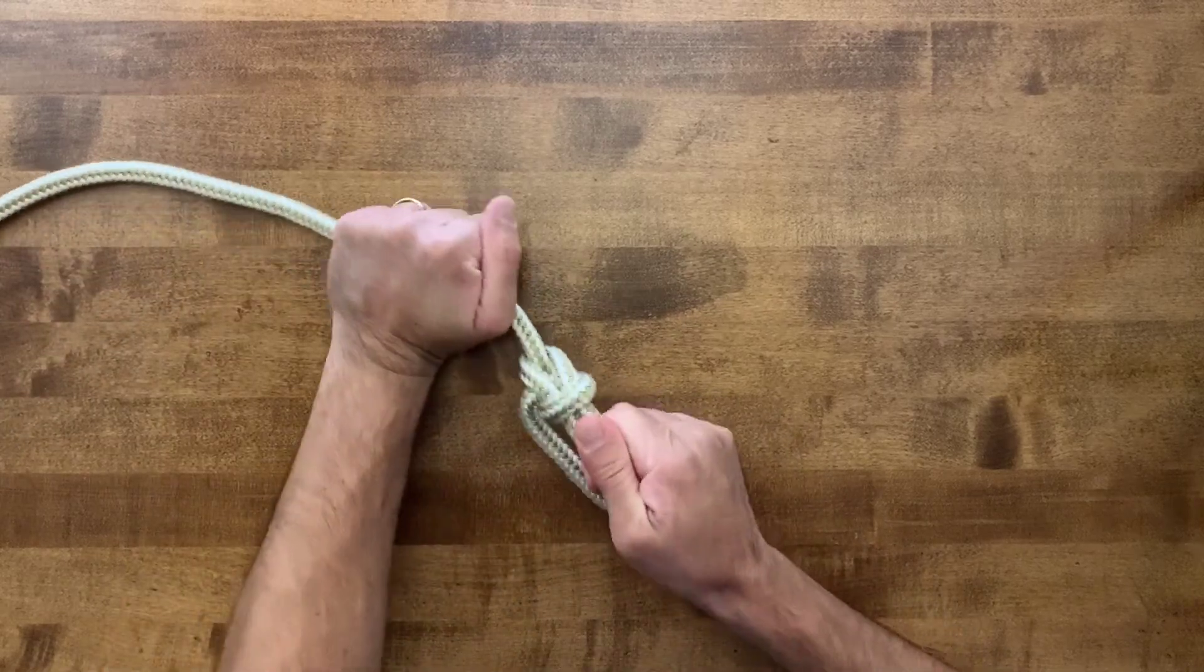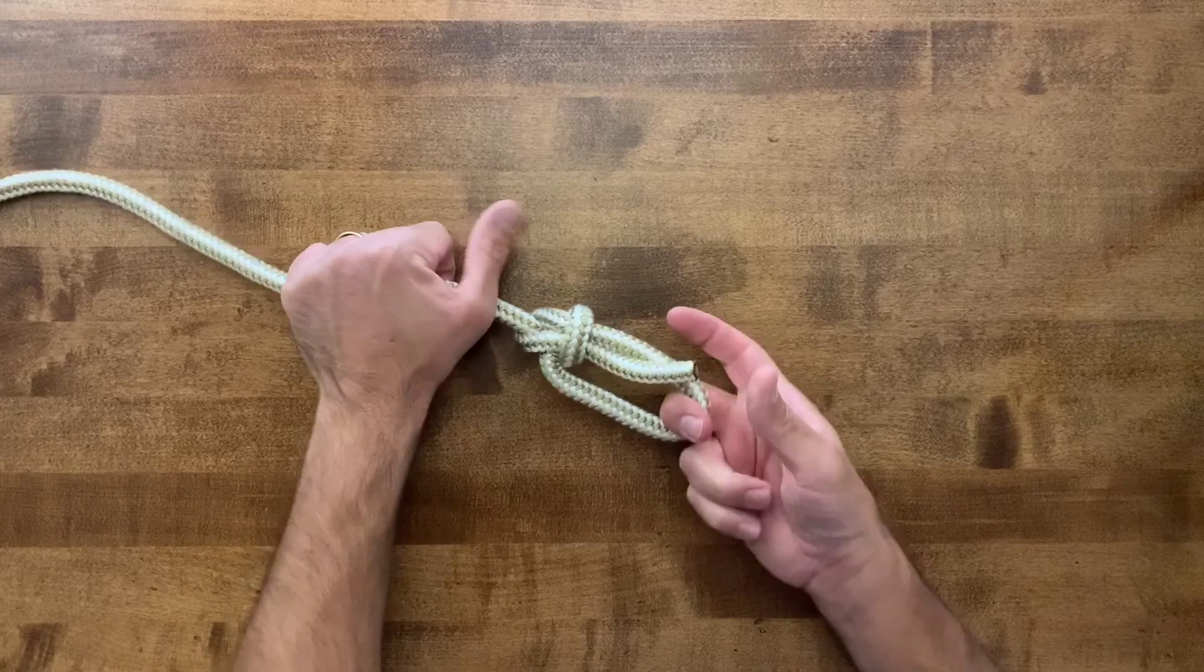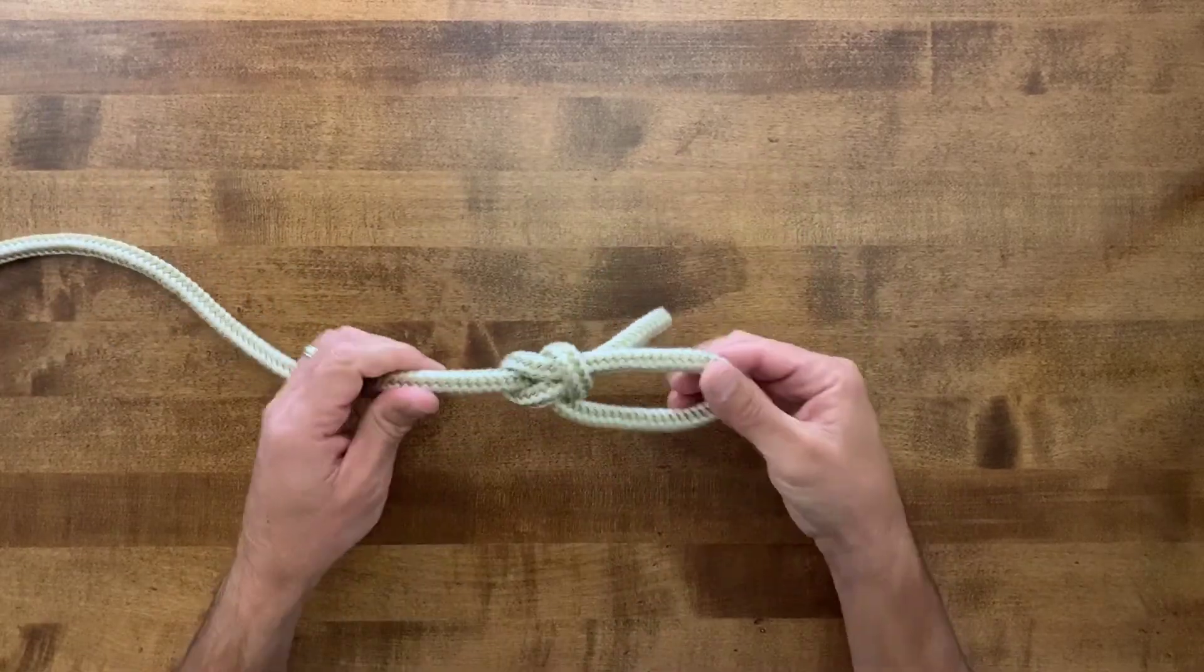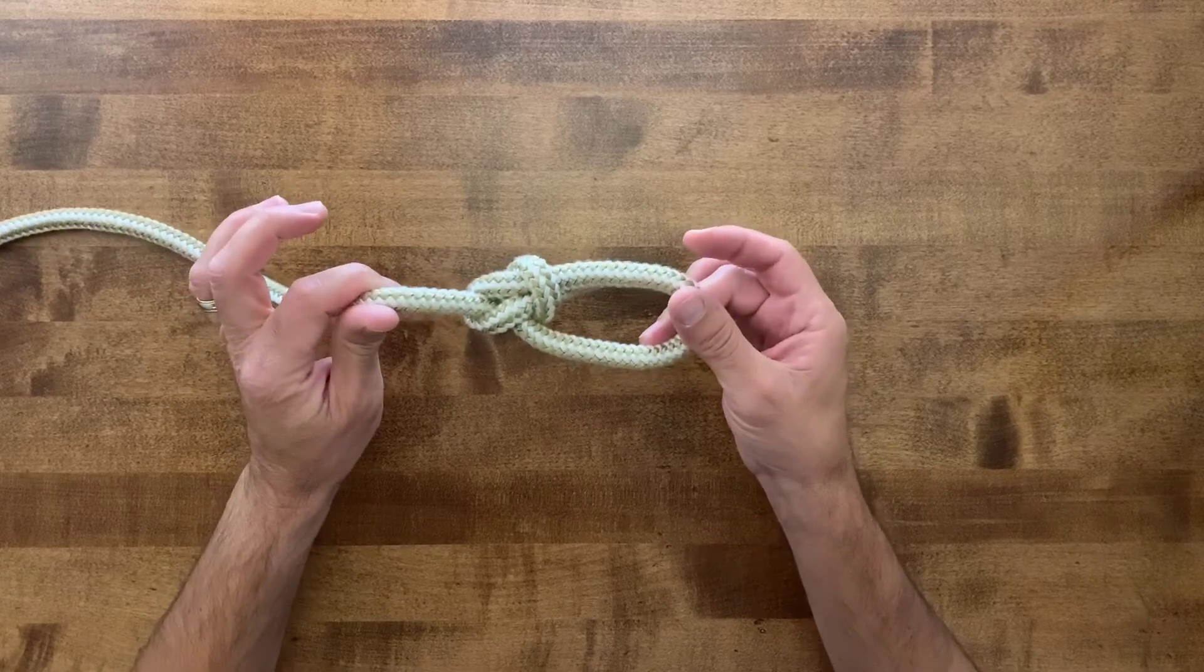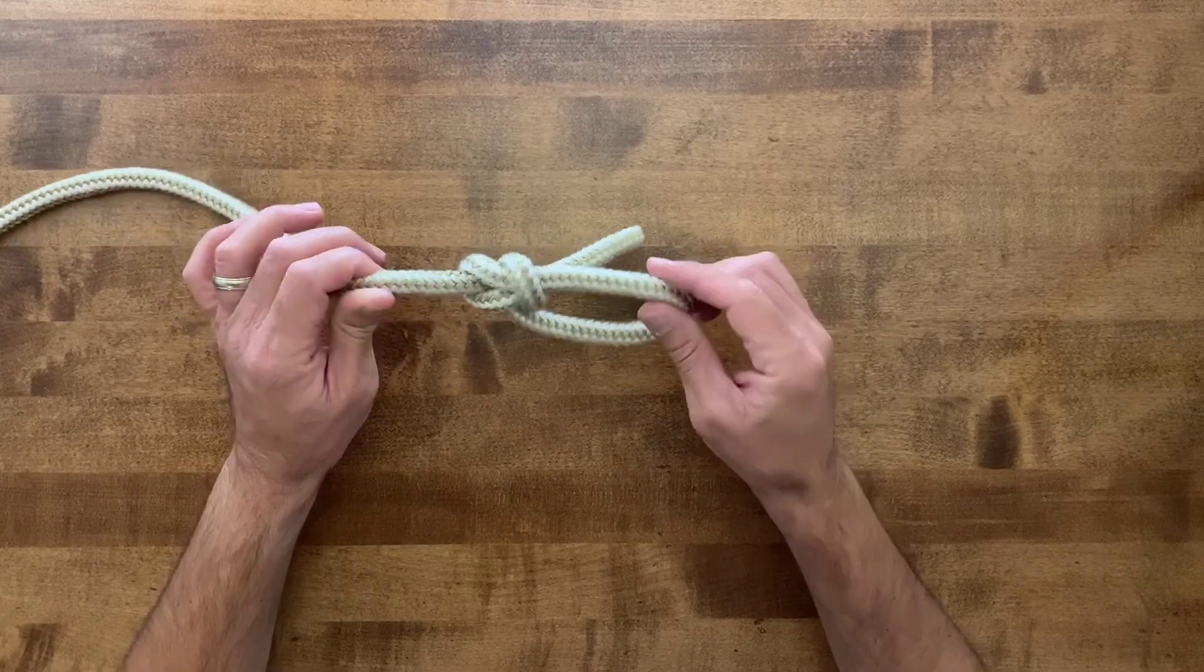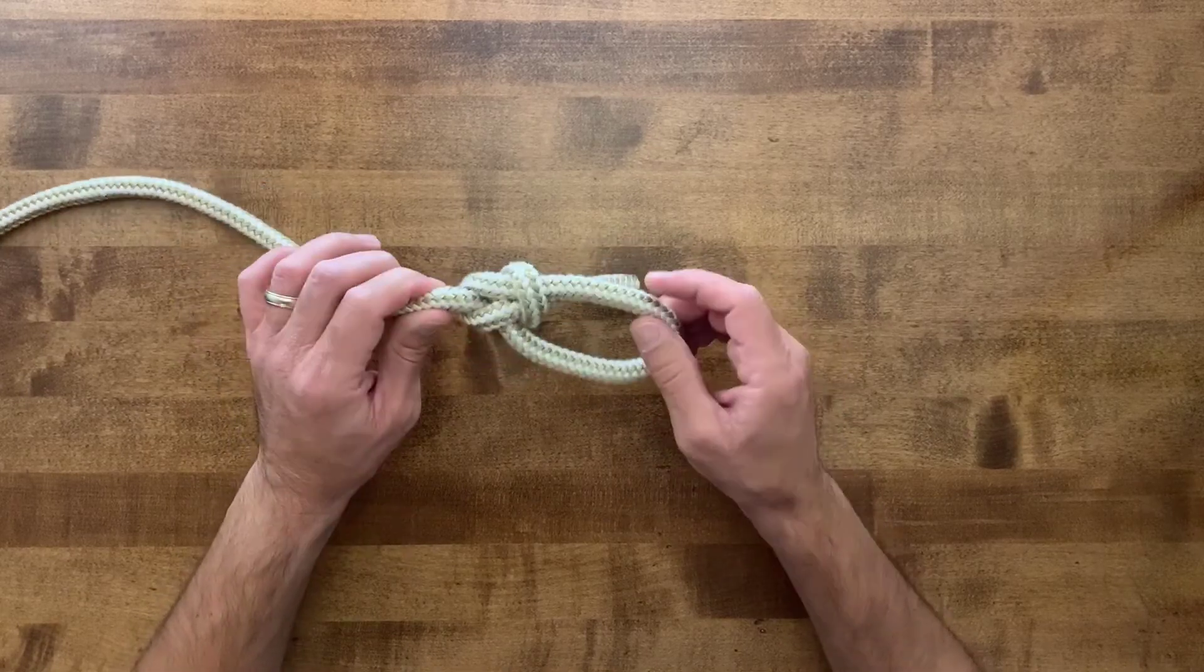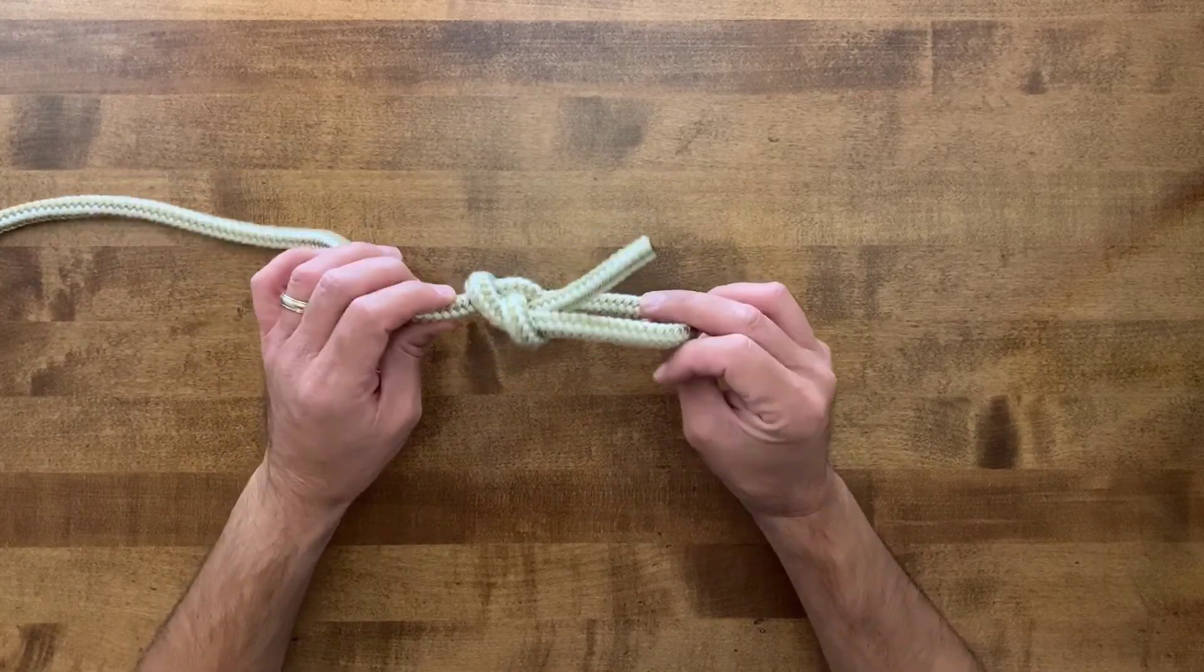That'll cinch this knot down on itself, and now you have a loop here that will not cinch. A loop that stays in place. Again, a fantastic knot, and there are other knots based off of this that we will tie based off this same knot.